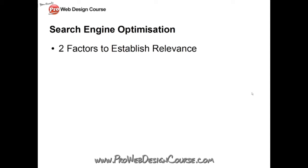Put yourself in the position of Google. When somebody searches for 'web designer Cambridge,' Google's job is to look in its massive index of billions of pages and organize any results that talk about web, designer, and Cambridge into a list. The number one result is the page Google thinks is most about 'web designer Cambridge.' Google uses two factors to establish how much a page is about a certain topic: first, what does the page say it's about.